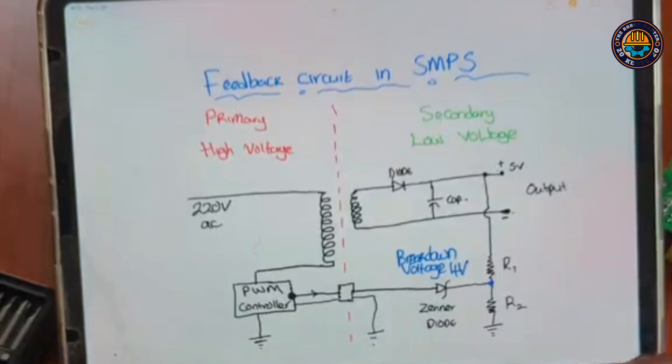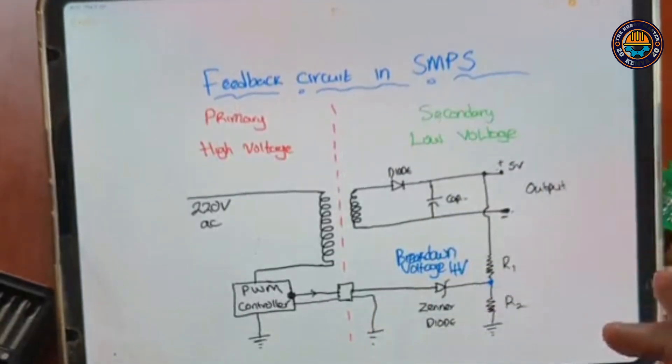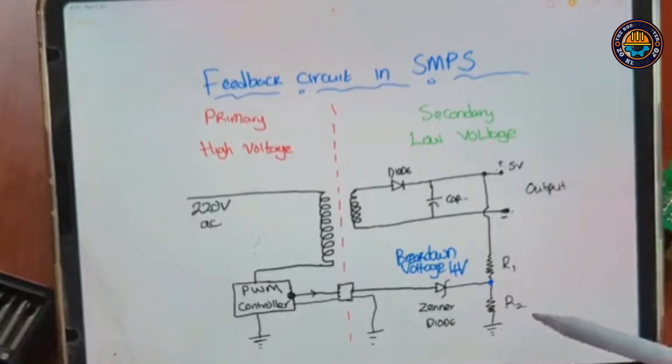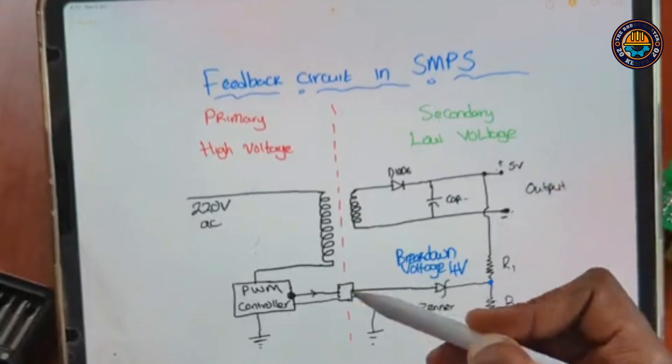The optocoupler is used in a feedback circuit. Now I need a video explaining how the feedback circuit works. You can find it among one of my videos. So on the secondary side, we have a bunch of resistors and a zener diode that lights the LED in the optocoupler.